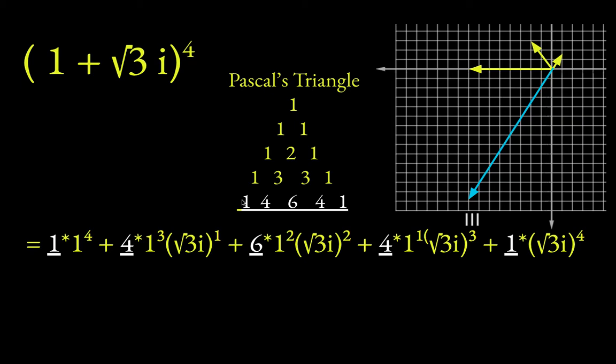You would get 1 times this first thing to the fourth power, and this term to the zeroth power, so I didn't even include it. Plus 4 times this thing to the third power, and this thing to the first. Then finally, the middle coefficient, 6, times this squared, times this squared, 4, and then you can see the pattern. We're just kind of reducing the exponents here.